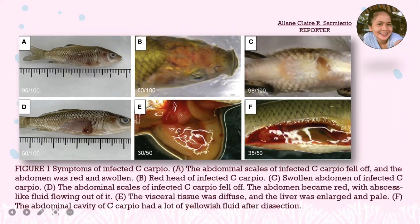In figure A, the abdominal scales of infected carpio fell off and the abdomen was red and swollen. Figure B shows the red head of infected carpio. Figure C shows a swollen abdomen of infected carpio. In figure D, the abdominal scales fell off and the abdomen became red with abscess-like fluid flowing out. In figure E, the visceral tissue was diffuse and the liver was enlarged and pale. Figure F shows the abdominal cavity of carpio had a lot of yellowish fluid after dissection.